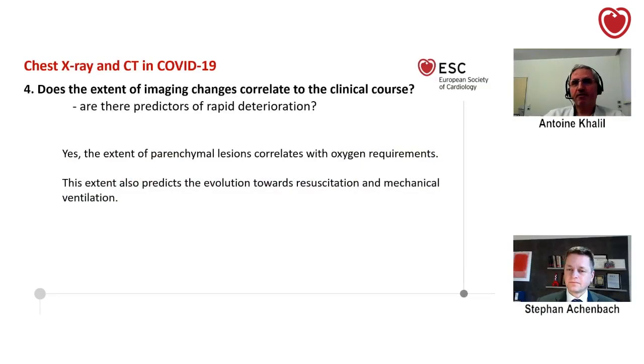Physicians are often surprised by the clinical course — patients can be stable for a long time and then suddenly experience worsening. Imaging is helpful here: the extent of parenchymal lesions correlates with oxygen requirement. A patient with a lot of consolidation — we know that within 48 or 72 hours they may be in the ICU with mechanical ventilation. This extent also predicts evolution toward respiratory failure and mechanical ventilation.